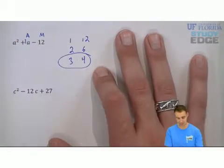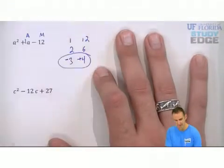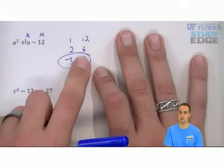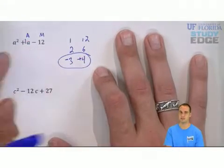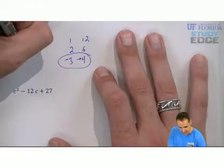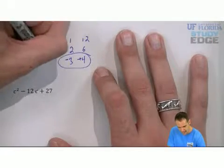Since I want a positive one, that means I want positive four and negative three. Because I want the bigger number to be positive to get a positive one. And that'll be a plus four and a minus three.